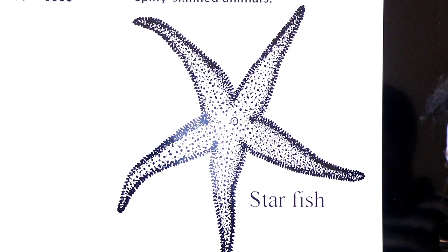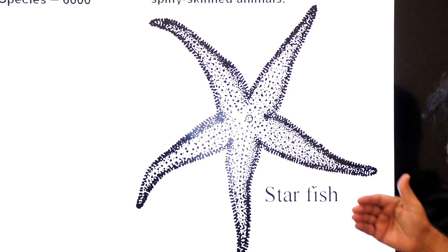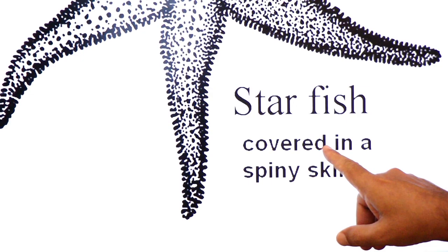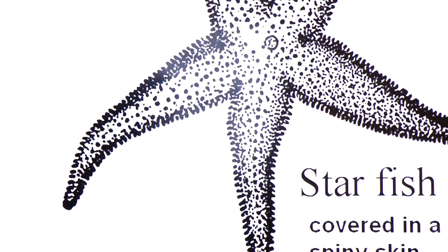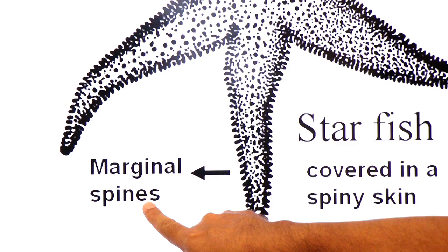You will see a diagram, starfish. You are very familiar with this animal. This is a member of phylum Echinodermata. Now you will see spines in starfish. The skin is covered in spiny skin. Here you will see spines on the margin. These are marginal spines.